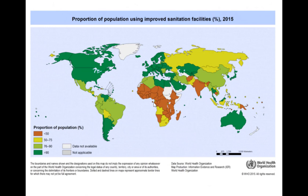This chart from the World Health Organization depicts the proportion of the population using improved sanitation facilities, in percentage, all over the world for 2015. Improved sanitation includes connection to public sewers or septic systems, pour-flush latrines and ventilated improved pit latrines — which are improved compared to unimproved facilities such as bucket latrines, public latrines and open pit latrines.